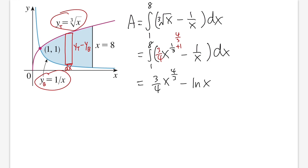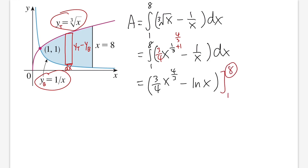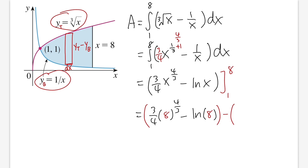Usually I'd put an absolute value inside the natural log when integrating 1 over x, but this time you don't have to because we're only going from 1 to 8 and both are positive numbers. So you can enter 8 into natural log without worrying. Let's work this out — plug in 8 first: we get 3/4 times 8 to the 4/3, minus ln 8. Then subtract the result of plugging in 1.